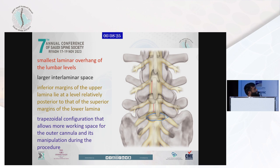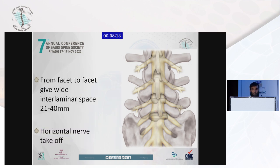As seen by the blue line, the trapezoidal configuration allows more working space for the outer cannula and its manipulation during the procedure. We also have, from facet to facet, a wide interlaminar space of 21 to 40mm, not like other levels. And the nerve root has a horizontal takeoff.